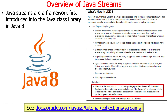Java streams are a framework that was first introduced into the Java class library in Java 8. If you look at what's new in JDK 8, which came out in March of 2014, one of the things listed under collections is the java.util.stream package, which provides a stream API to support functional-style operations on streams of elements. The stream API is integrated with the collection API, enabling bulk operations on collections, such as map-reduce operations, either sequentially or in parallel.